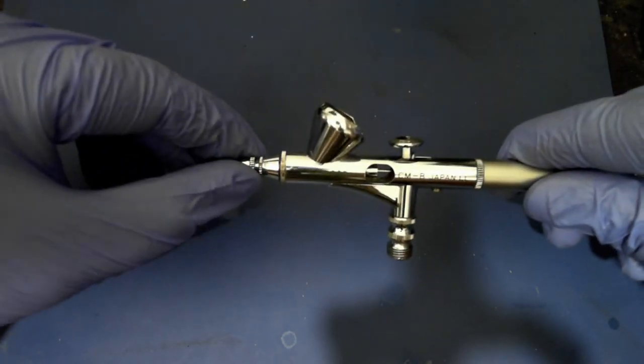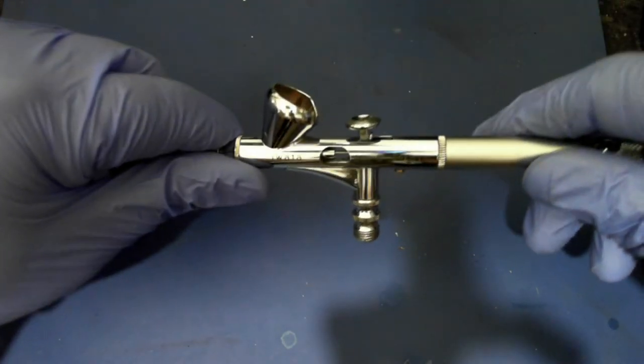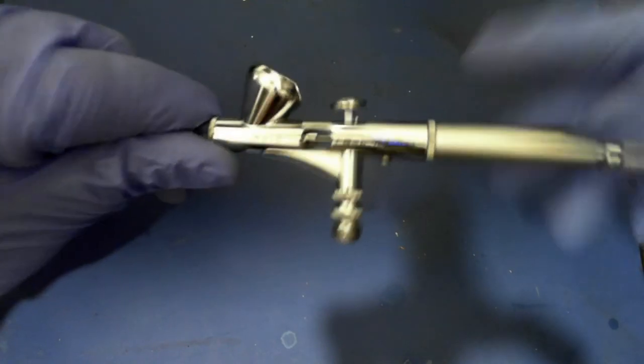An internal mix, like this one, will mix the paint and air together inside the airbrush, then allowing it to exit as a mist. Most double action airbrushes utilize this method of mixing.